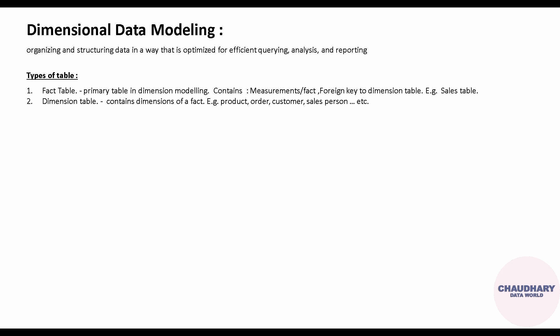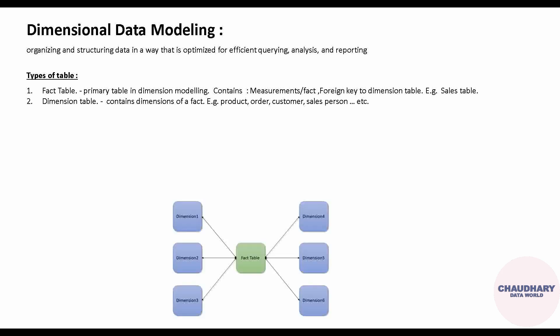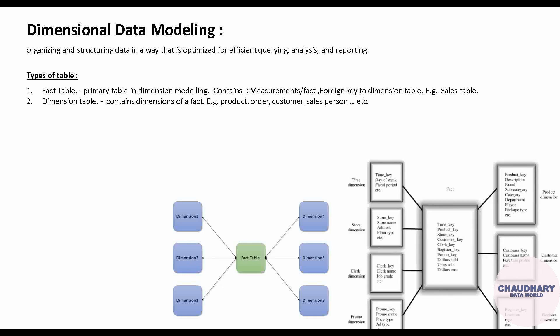Now let's see how these things are mapped visually. Suppose you have a fact table and there are multiple dimensions — for the sales table, you might have product, order, customer, salesperson, and so on. All these dimension tables are visually mapped around the central fact table. This is a general representation I am showing you right now.